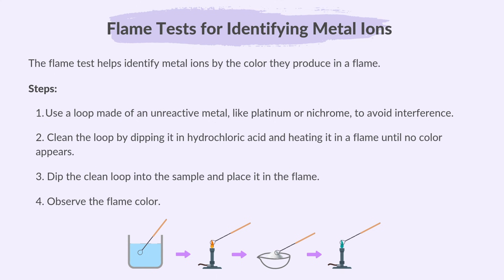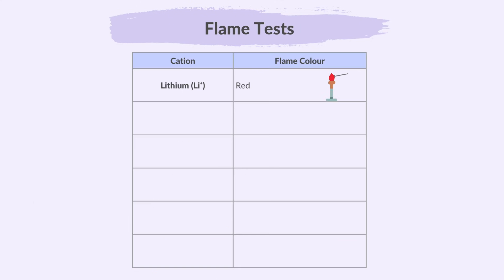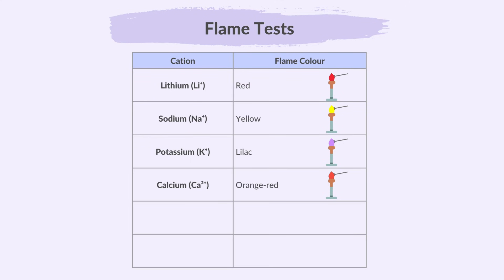Here are the flame colours: lithium gives a crimson red flame; sodium gives a bright yellow flame; potassium gives a lilac flame; calcium gives an orange-red flame; barium gives a pale green flame; and copper 2 gives a blue-green flame.